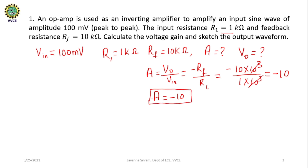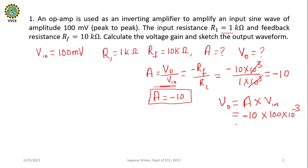Now we need to calculate the output voltage V0 with respect to the input applied. The input voltage is 100 millivolts peak to peak. We can rewrite as V0 = A × Vin. The gain is minus 10 and Vin is 100 millivolts, which is 10^-1 × 10^-1. So V0 = minus 10 × 100 × 10^-3, giving minus 1 volt. So V0 equals minus 1 volt.